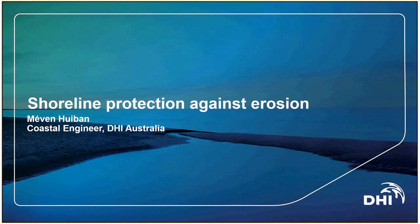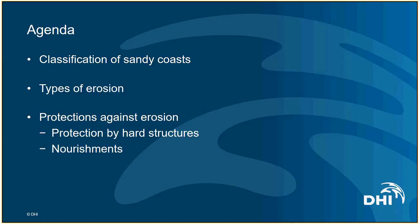The previous webinar is still available online, so if you want to have a look at it you're welcome — it will probably help you understanding some of the processes. Today's agenda: we'll start by classifying the sandy coasts, then look at the different types of erosion that can affect them, and then detail some of the main measures against erosion — especially two types: hard structures and soft protection using nourishments.